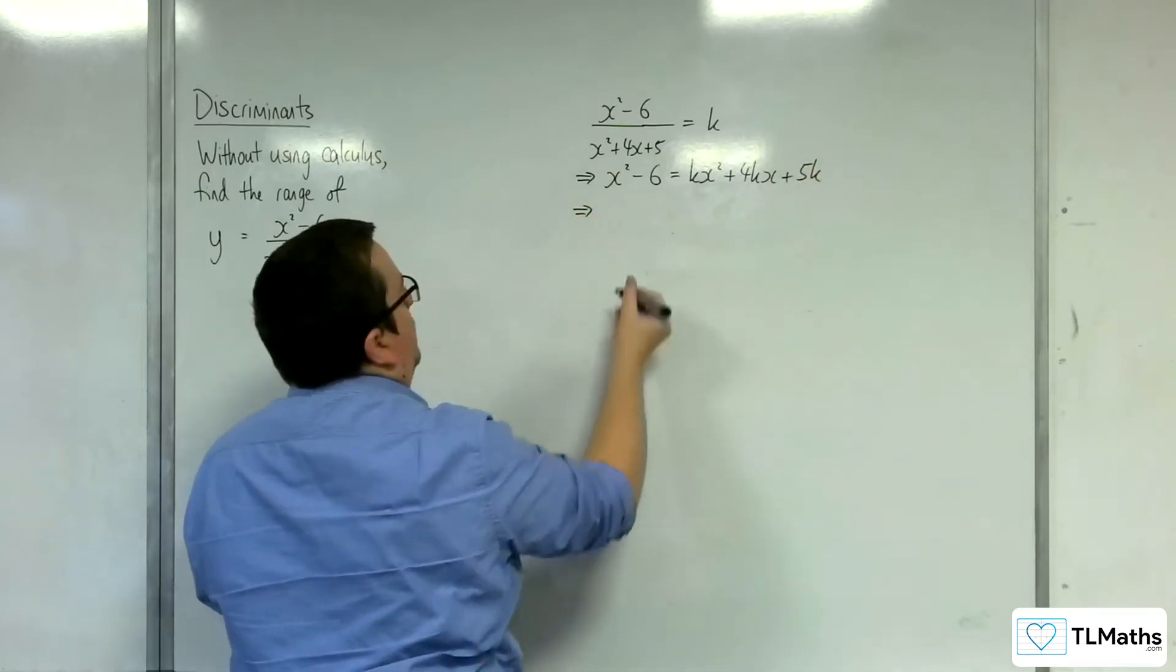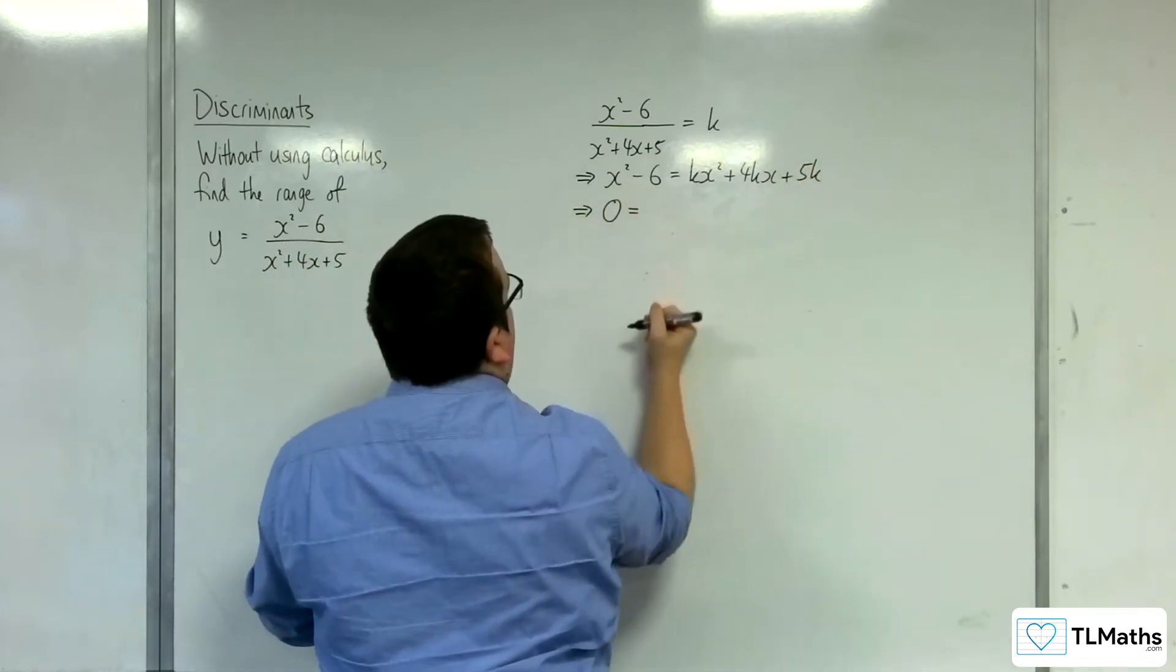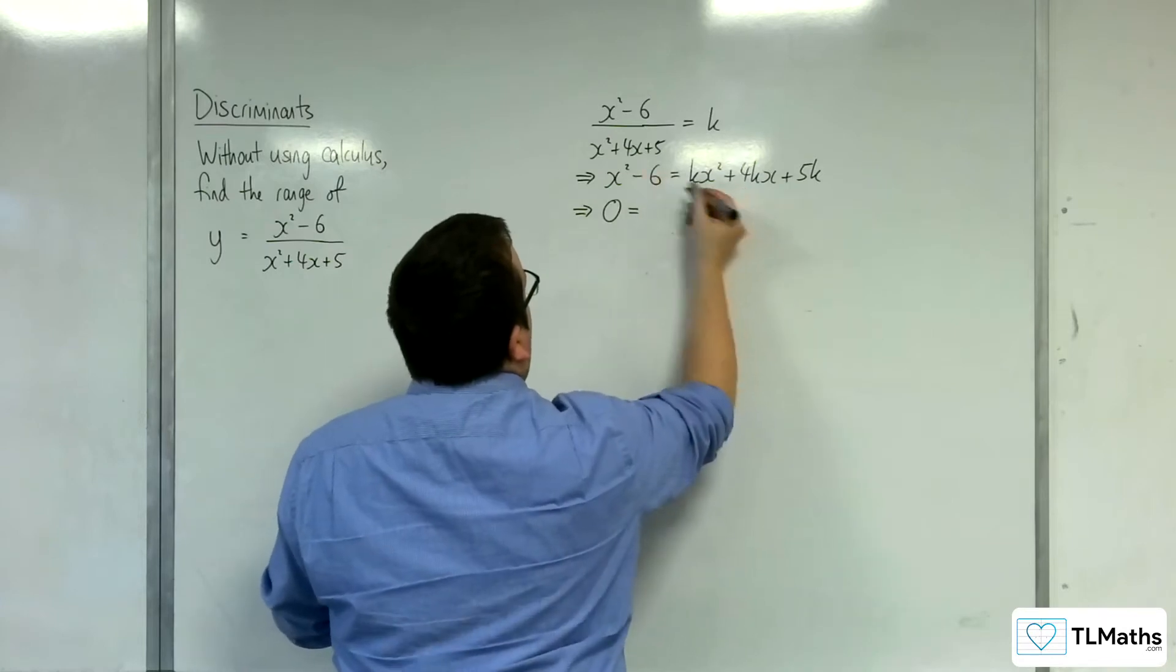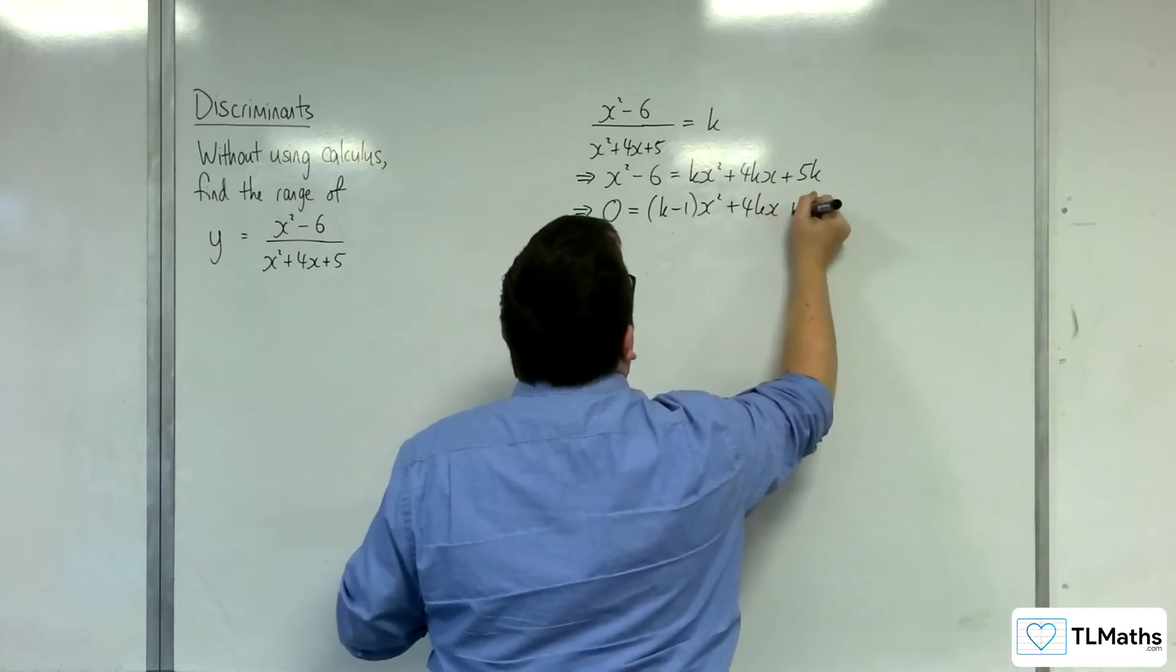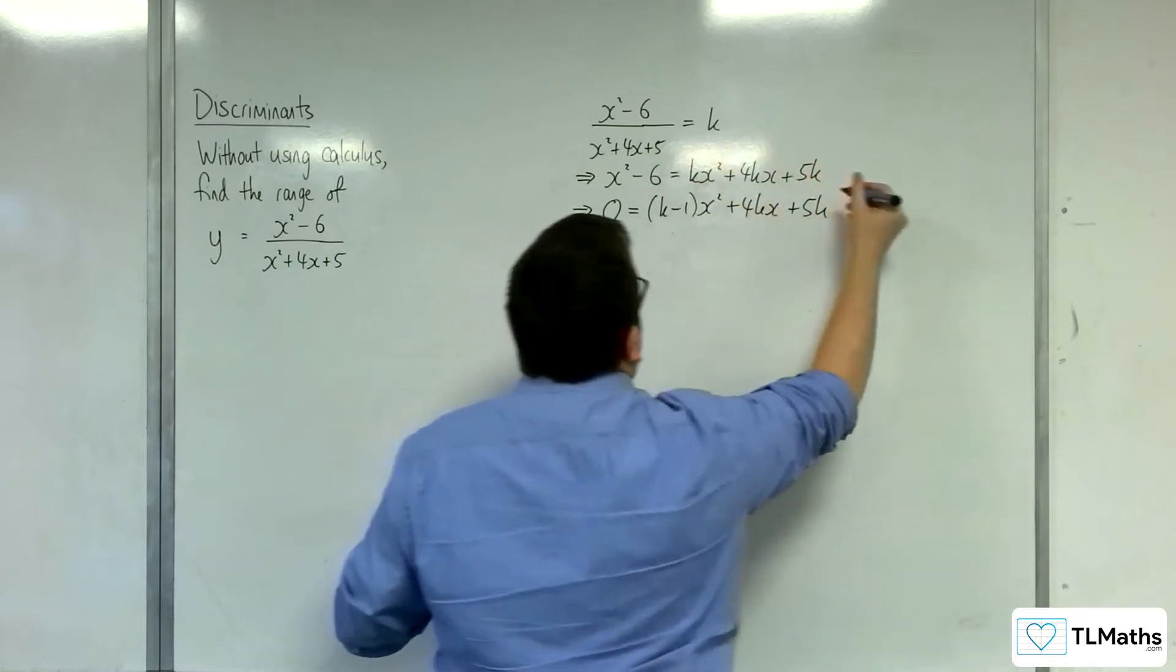And then I'm going to rearrange everything onto the right hand side. So I get 0 equals, subtract the x squared from both sides, we'll have k minus 1 times x squared plus 4kx plus 5k and add the 6 to both sides as well.